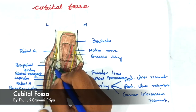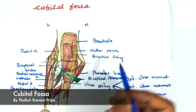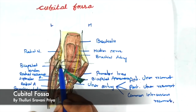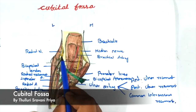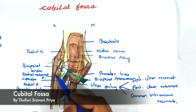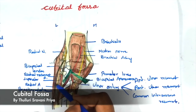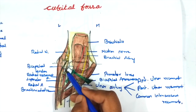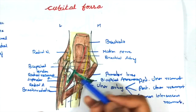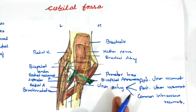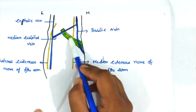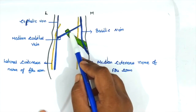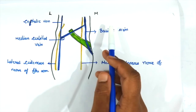The deep branch enters the extensor compartment of the forearm. To summarize the contents: median nerve, brachial artery, bicipital tendon, and radial nerve. The clinical significance of the cubital fossa is that the bicipital aponeurosis forms a thin platform for the median cubital vein during venepuncture, and it also protects the underlying brachial artery and median nerve.